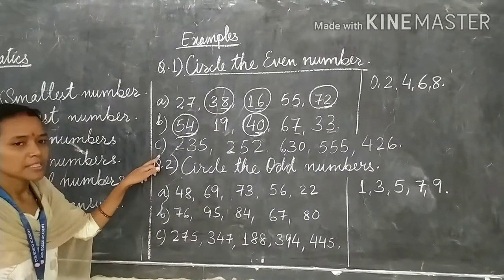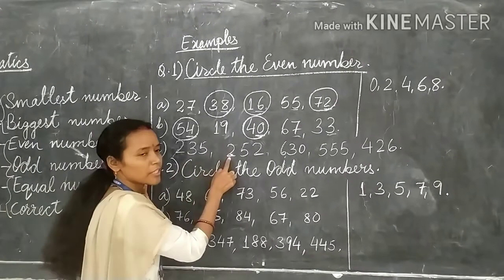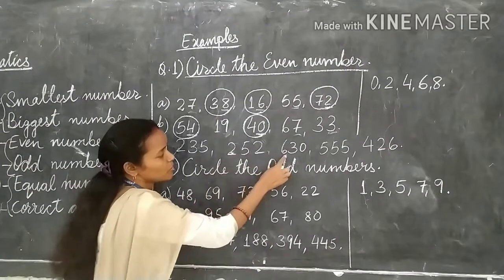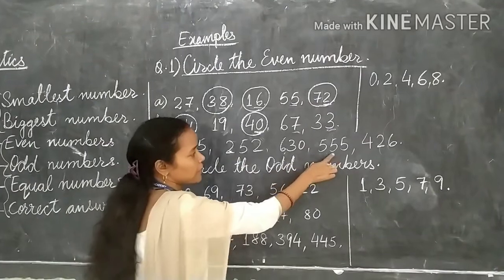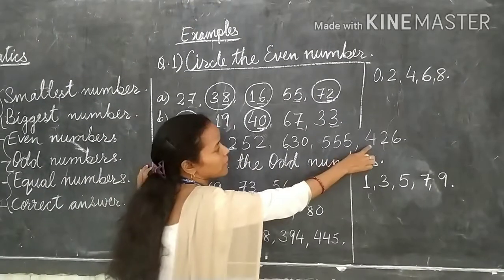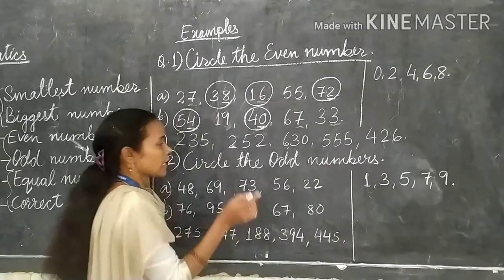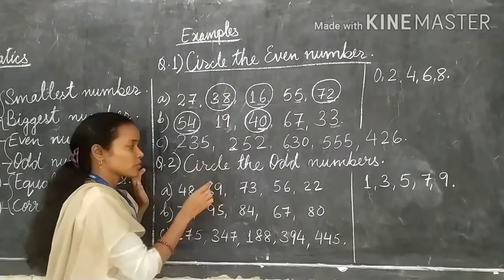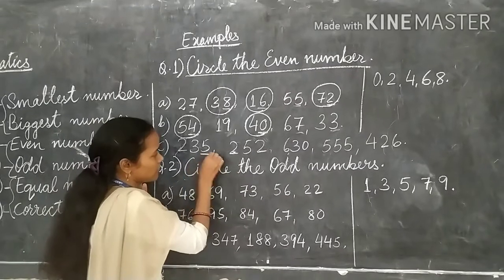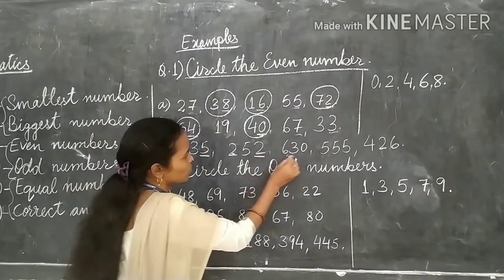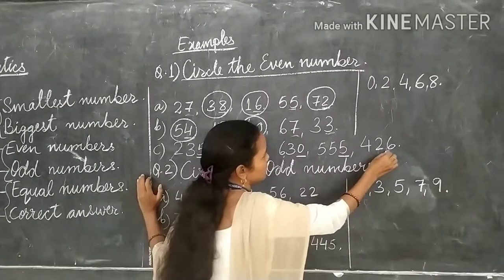Now number C: 235, 252, 630, 555 and 426. Again we will focus on the place of 1's. The ones digits are 5, 2, 0, 5, 6.